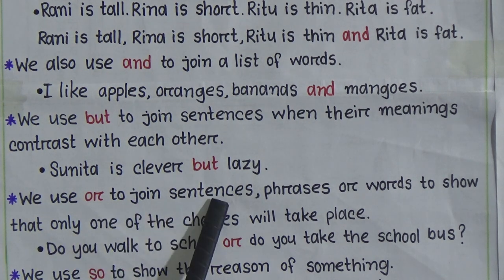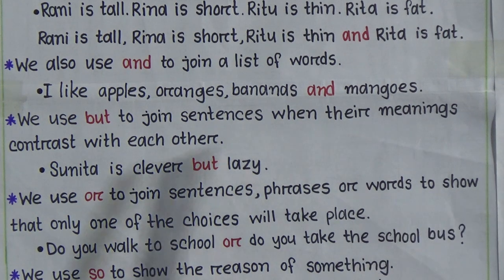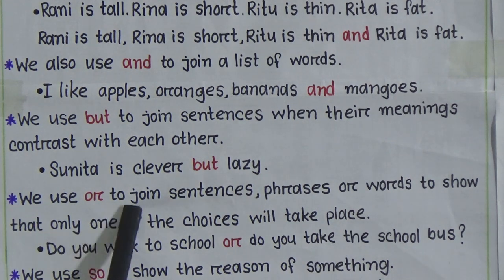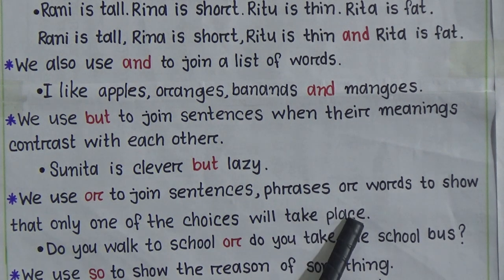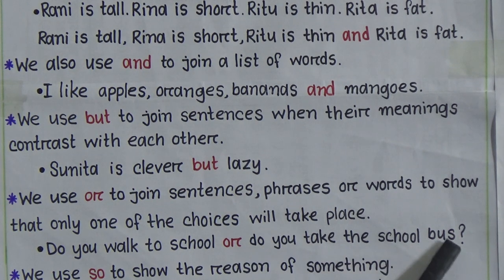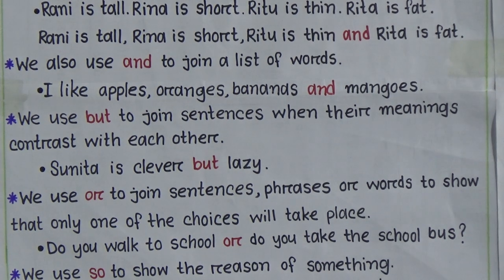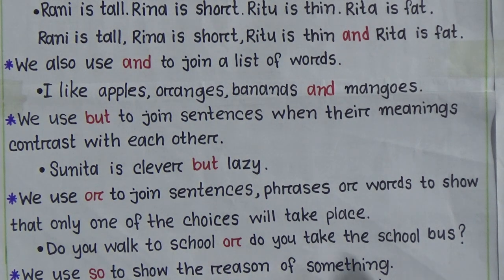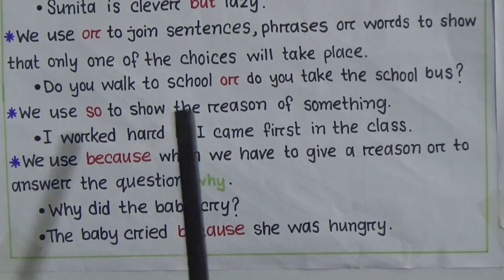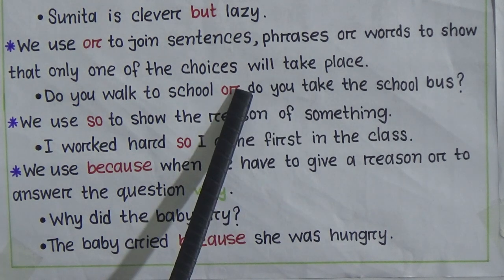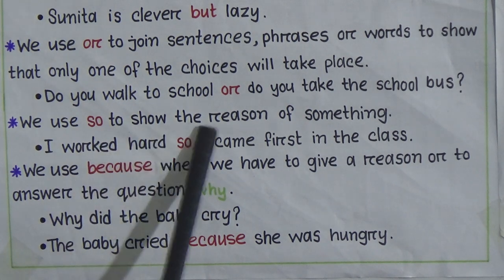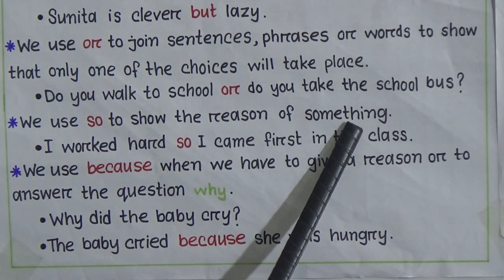Next: we use 'or' to join sentences, phrases, or words to show that only one of the choices will take place. For example: 'Do you walk to school or do you take the school bus?' Here you can choose - you can walk to school or take the school bus. When you find any choice situation, you have to use 'or'.